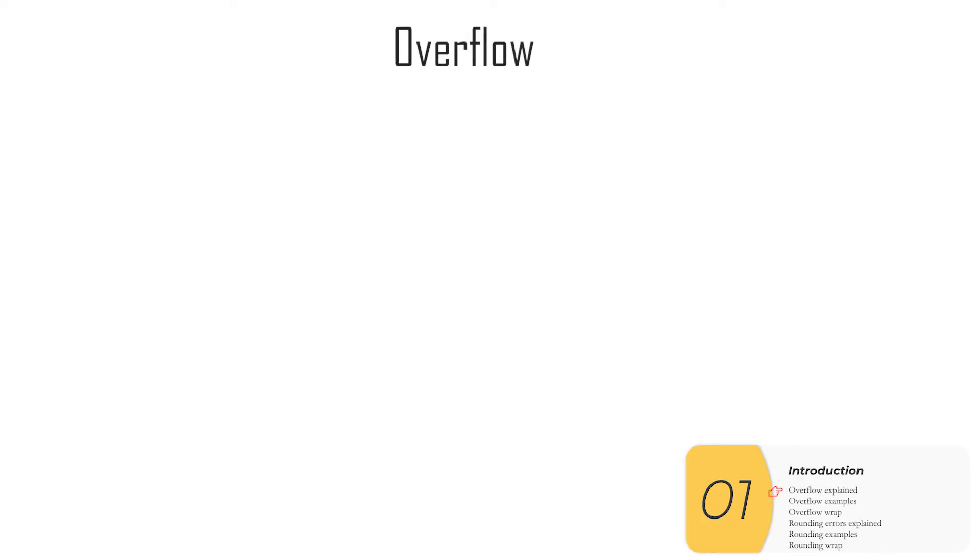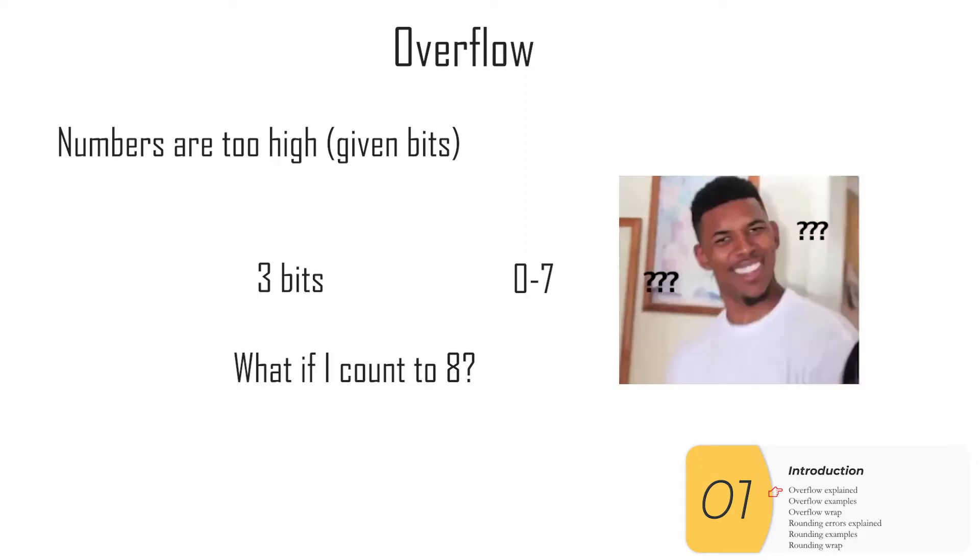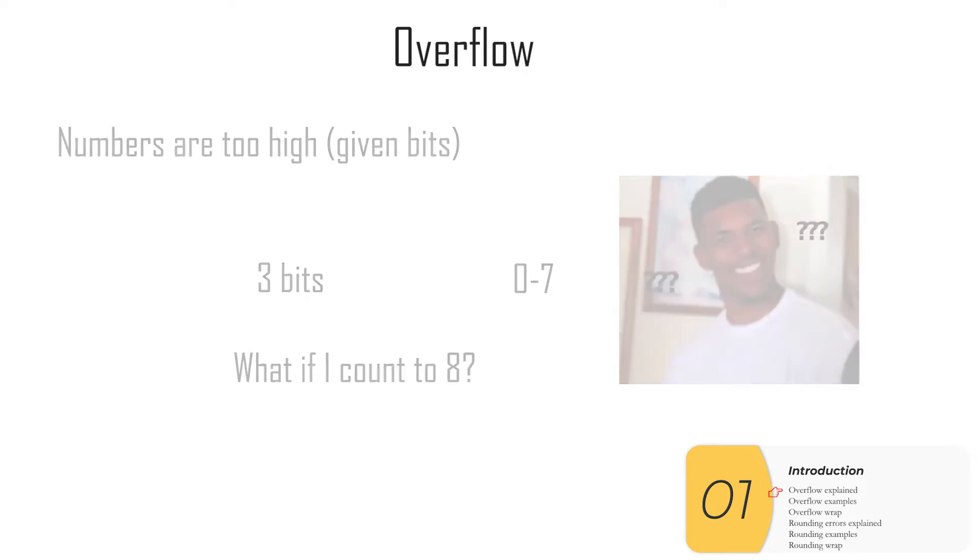All right, overflow errors. Overflow errors happen when the numbers that you need are too high, given the number of bits that you have. So for instance, if my system uses three bits, I can count from zero to seven, no problem. But what happens if I need to count to eight? The answer is I don't really know. My counter might go back to zero. Everything might break. And that's an overflow error.